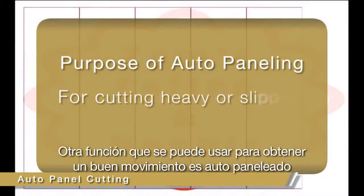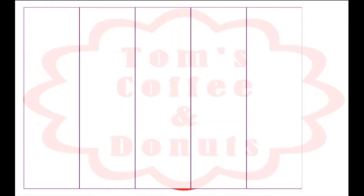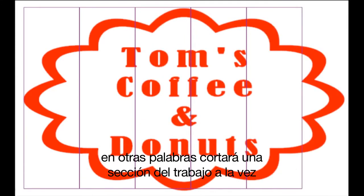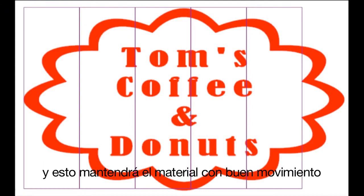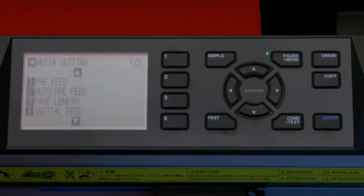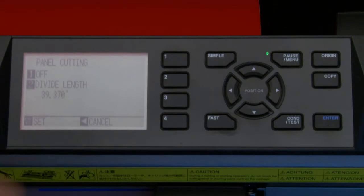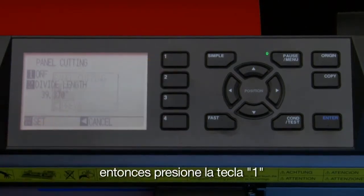This will allow the push roller to make a better impression on the media for tracking. Press enter to have the cutter accept the change, then press the pause menu key to return to ready mode. Another function for obtaining good tracking is auto paneling. Picture the scenario where you are cutting a stiffer media that tends to slip, causing the media to skew as it moves back and forth — some reflective materials can be like this. To enable auto paneling press the pause menu key, press the 4 key for media, press the up arrow key to switch to the second page of options, then press the 2 key for panel cutting.